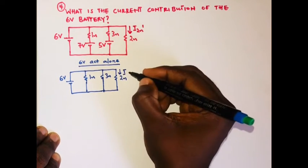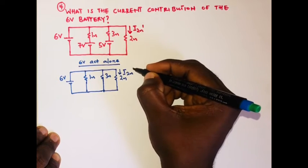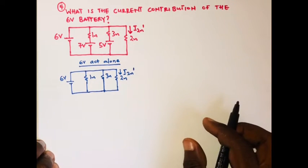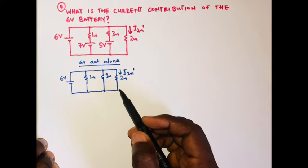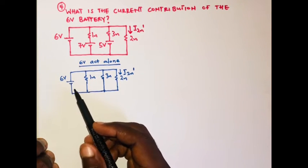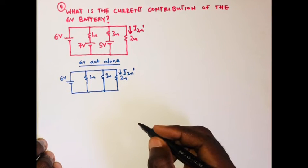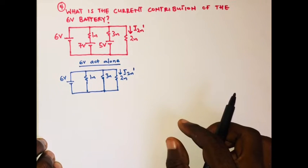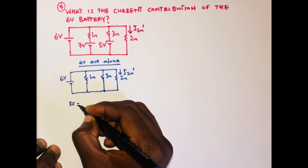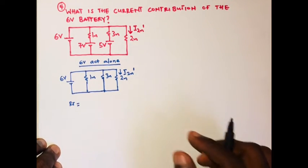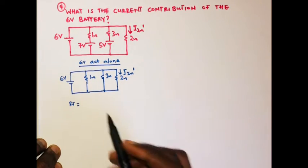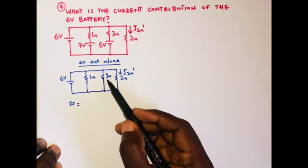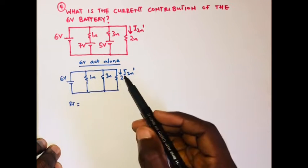The current flowing through the two ohm resistor is what we have as I₂Ω prime. To find this current, first we need to find the total resistance of the circuit, then find the current produced by the six volts, and then use the current division rule. We realize that the one ohm resistor is in parallel with the three ohm resistor, and the one ohm resistor is also in parallel with the two ohm resistor.